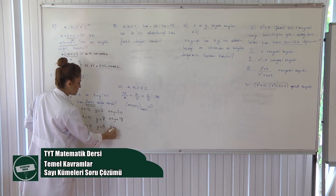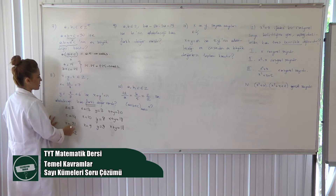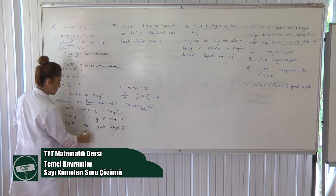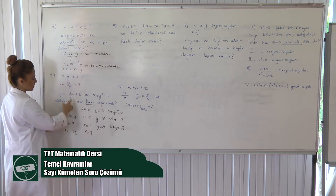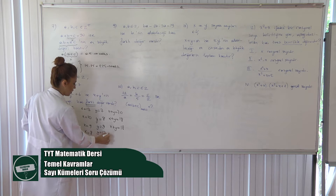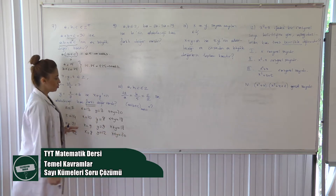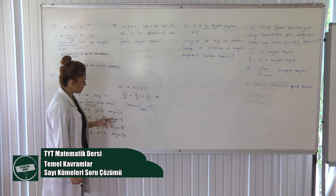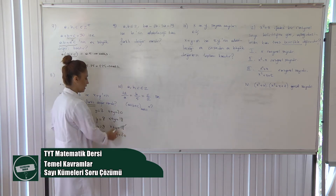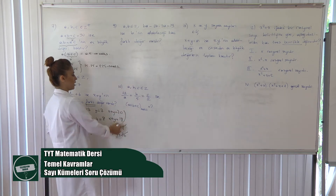Z'ye 42 verirsem: 42 bölü 42 = 1, 7 daha X = 8. Y için 42 bölü 7 = 6, 6 daha Y = 12. X artı Y = 20. Bakın 20, 20, 18, 18 çakıştılar. Bunları birer kez almam gerekiyor çünkü 'farklı değer' dediği için. Buradan iki tane değer var, ama bitti mi? Hayır.